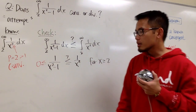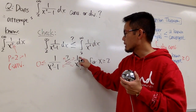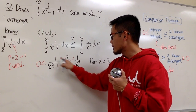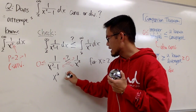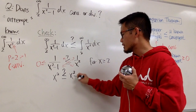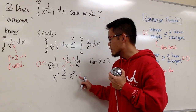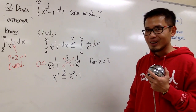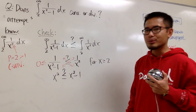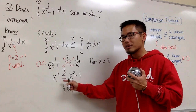Let's cross-multiply. Since everything is positive, we keep the same inequality symbol. We get x squared on the left-hand side, less than or equal to x squared minus 1 on the right-hand side. But x squared is less than or equal to x squared minus 1 means 0 is less than or equal to negative 1. That doesn't look right. This inequality is clearly false.